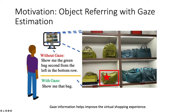Object Referring is a multi-modal task that requires an understanding of both image and language and making the proper connections between them. It has a wide variety of real-world applications, especially for human-computer interaction. Gaze information helps improve the virtual shopping experience.